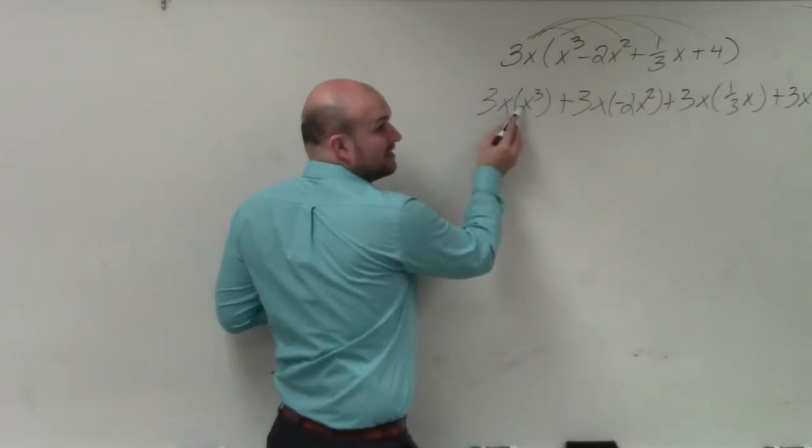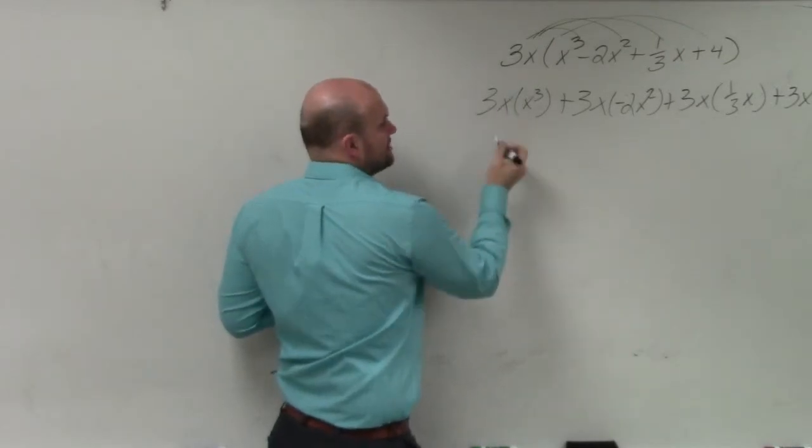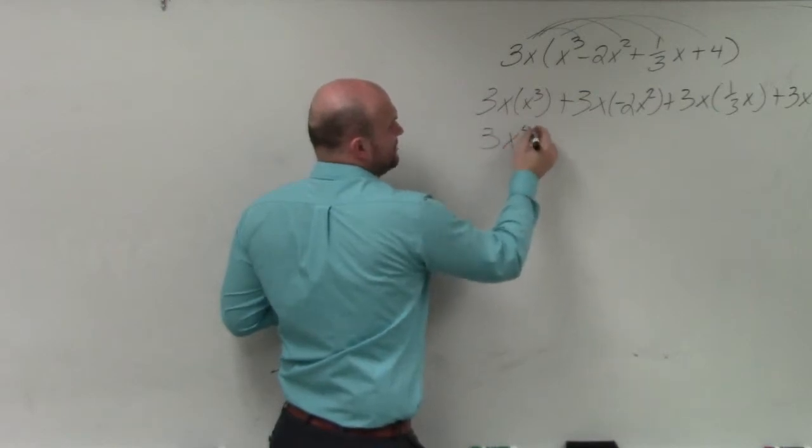Well, here, the coefficient is 1, even though you don't see it written there. So 3 times 1 is 3. x times x cubed is x to the 4th.